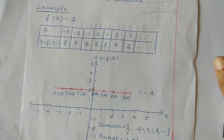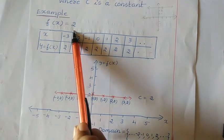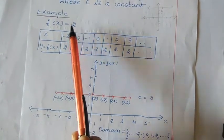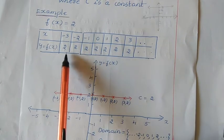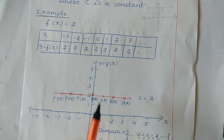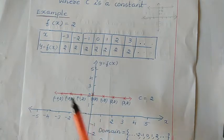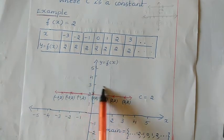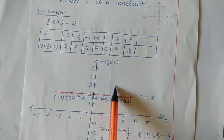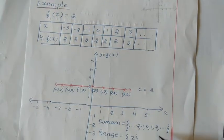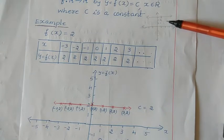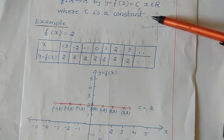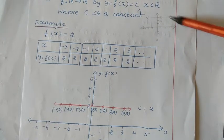Similarly, if f of x is equal to 3, certain changes will occur — the range is 3. So whatever the input value — minus 3, minus 2, minus 1, 0, 1, 2, 3 — you are going to get the answer as 3 only. If I represent the same thing graphically, you get a straight line where c equals 3. The domain remains the real number but the range becomes 3, and all the values point to 3 only.